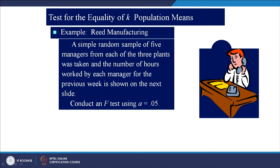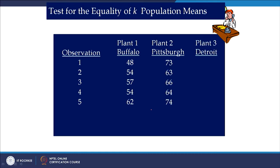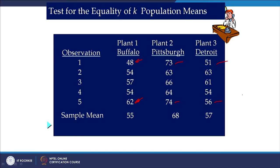A simple random sample of five managers from each of three plants was taken and the number of hours worked by each manager for the previous week is shown in the next slide. We have to conduct an F-test or ANOVA at a significance level of 0.05. There are three plants: Buffalo, Pittsburgh, and Detroit. These are the number of hours the managers worked — for example, 48 hours and 62 hours for the Buffalo plant, 73 and 74 for Pittsburgh, and 51 and 56 for Detroit.